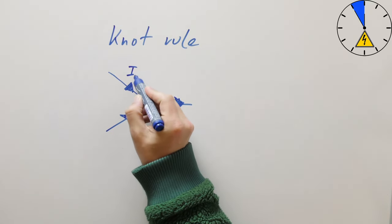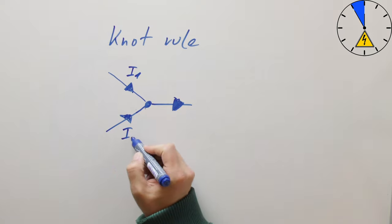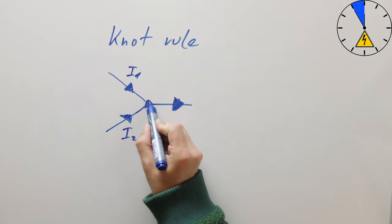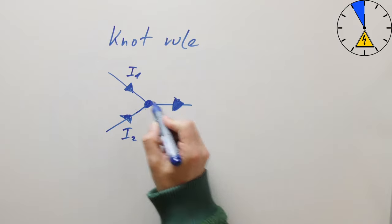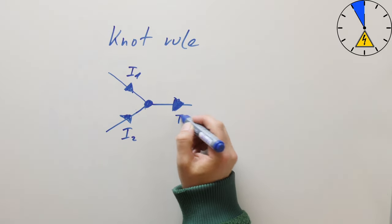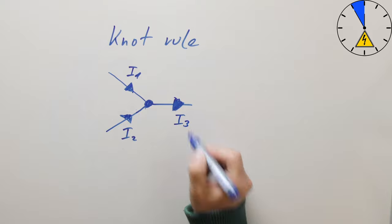Okay, here we have the current I1 and here the current I2 which flows into this knot. And the output of this knot is the current I3.